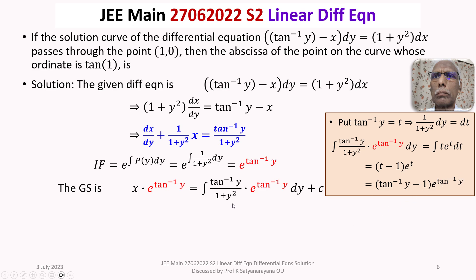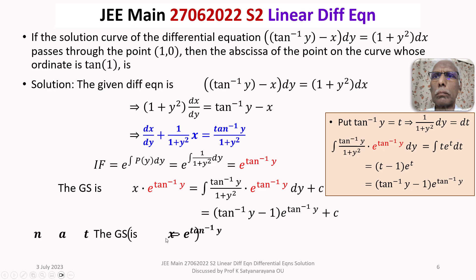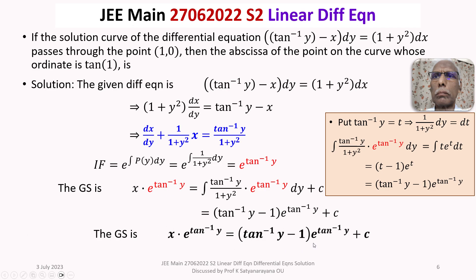Going back to the main solution, after integration the right-hand side becomes (tan inverse y minus 1) times e to the power tan inverse y plus c. Thus the general solution is x times e to the power tan inverse y equals (tan inverse y minus 1) times e to the power tan inverse y plus c.